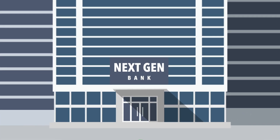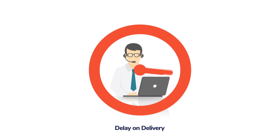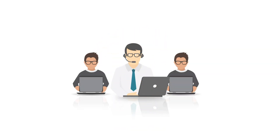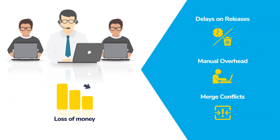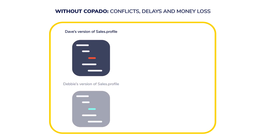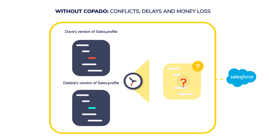Rob from NextGen Bank has been late on the past two releases. By not delivering the features on time, his development team caused hundreds of thousands in loss of profit for the company and new business. One of the reasons behind the delay was Rob's team spending hundreds of hours on manually resolving huge Git conflicts.